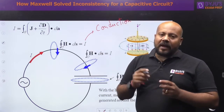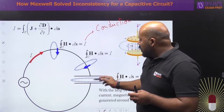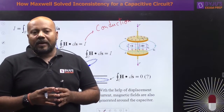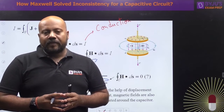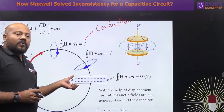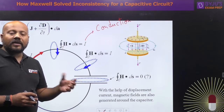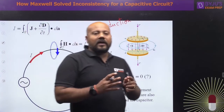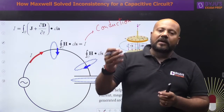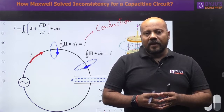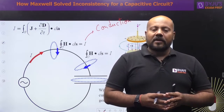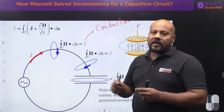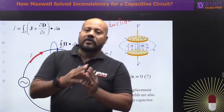But if you apply the same Ampere's circuital law in between the parallel plates of the capacitor, it is very difficult to justify how current is actually flowing between the two plates. Because in between the two plates of the parallel plate capacitor, there is either air or some dielectric medium, and conduction current can only be present in the case of a conductor or conducting wire. So it was inconsistent to apply Ampere's circuital law and prove the continuity of conduction current between the two plates.